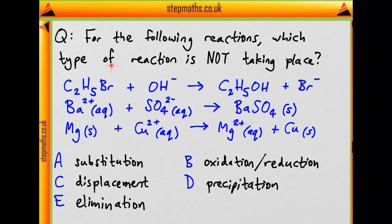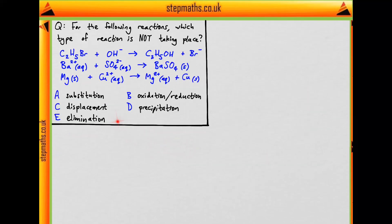And so the reaction types are substitution, redox, displacement, precipitation and elimination. So which one of these is not taking place in these reactions? So let's go through each of these reaction types and see if we can spot it in the reactions that we're given.